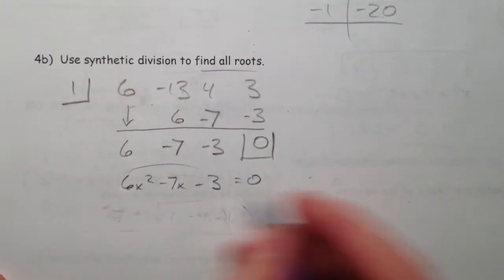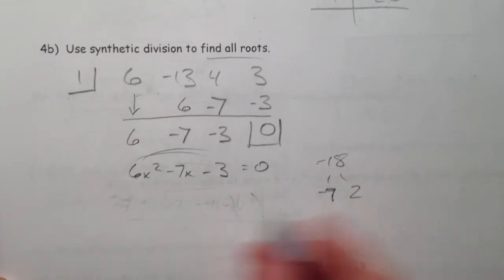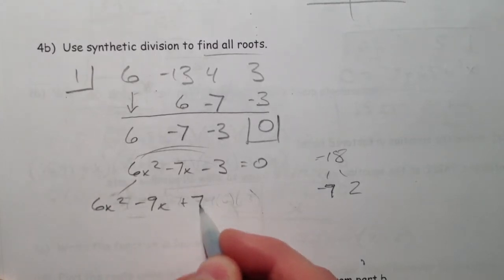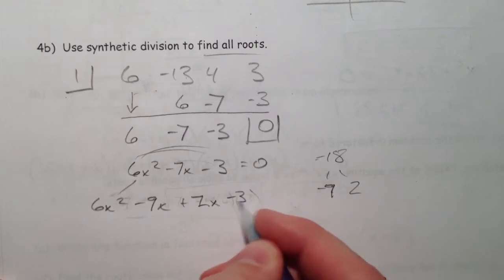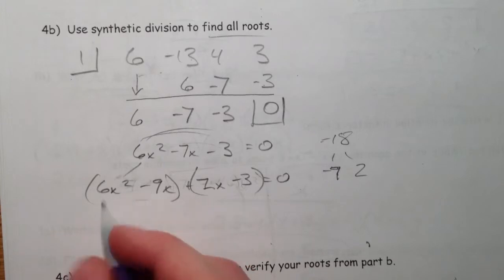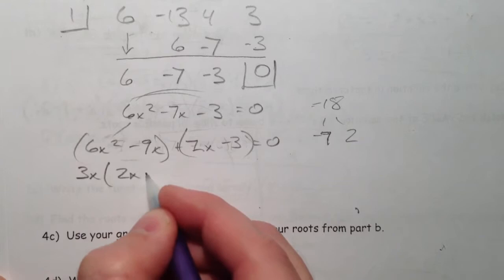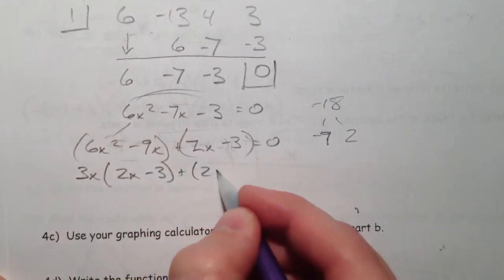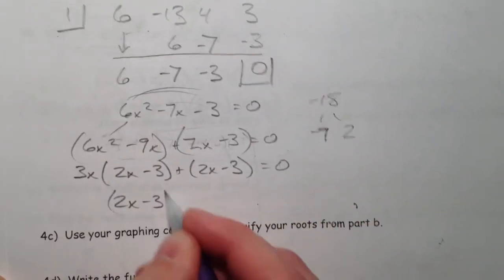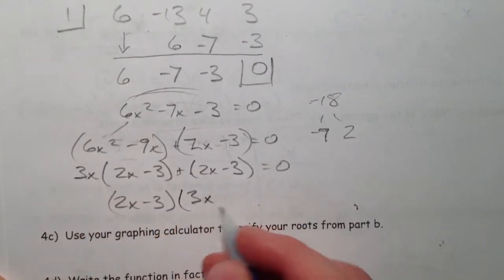What multiplies to negative 18 and adds to 7? Negative 9 and 2. So 6x squared minus 9x plus 2x minus 3. So factor out a 3 and an x. That leaves a 2x minus 3, and we already have a 2x minus 3. And again, you don't have to factor out this long way, this is the AC method as we've done it. 2x minus 3 leaves a 3x plus 1.